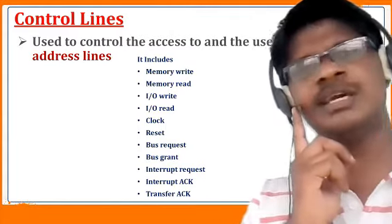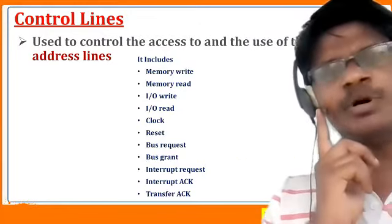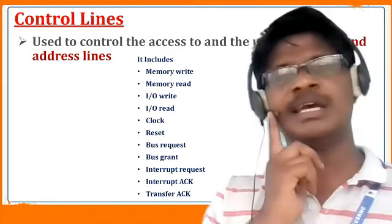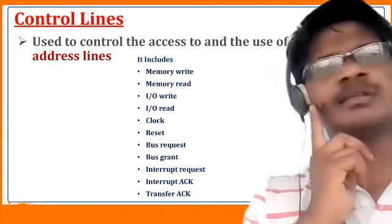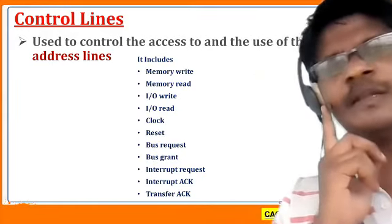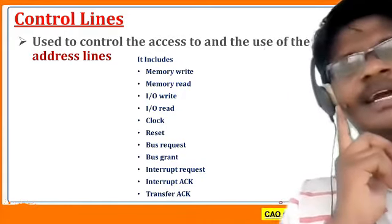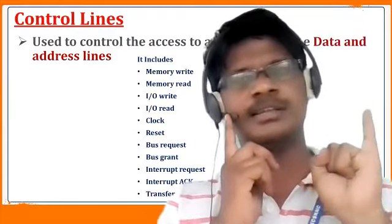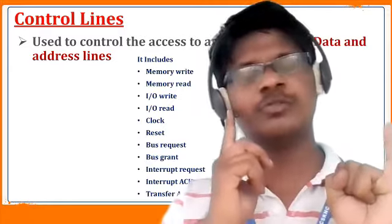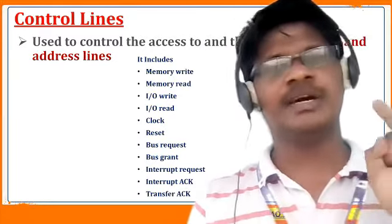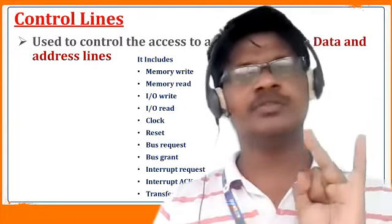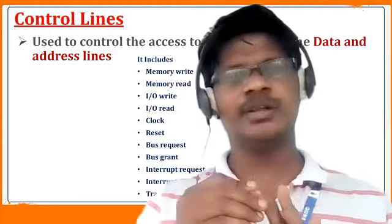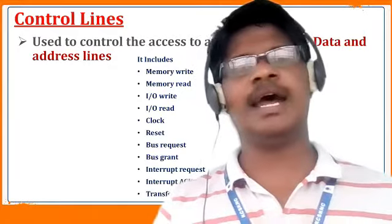The control bus includes some operations such as memory read, memory write, and interrupt request. Sometimes some devices might give an interrupt signal in order to access the address bus or the data bus. To summarize: the address bus is used to designate the source or destination and it is unidirectional; the data bus is used to fetch the data and it is bidirectional; and the control bus is used to control the access of the data bus and the address bus. Thank you.